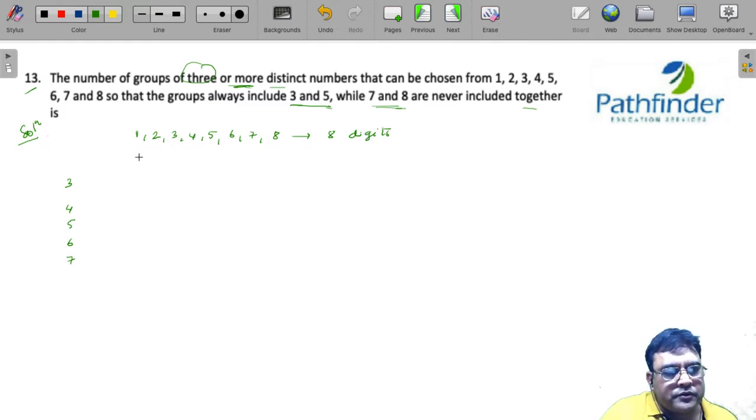One thing is sure that either I will have a group which contains 3, 5, 7 or I will have a group that doesn't contain 7 or 8, any of these numbers. So, what do you have now?